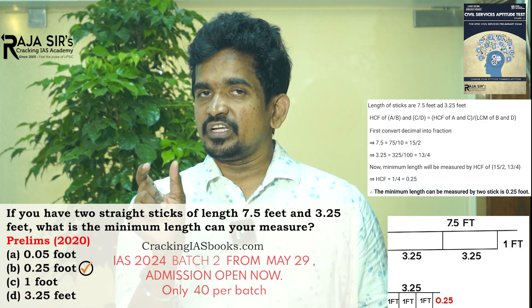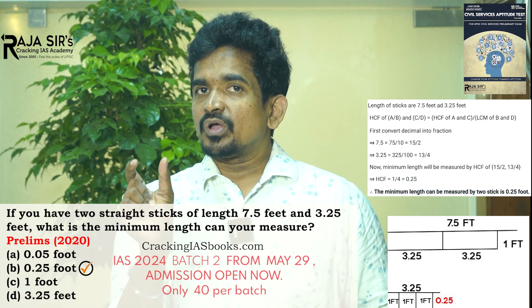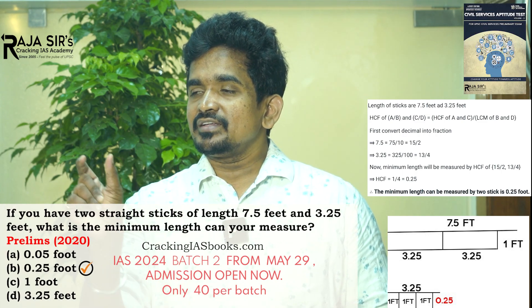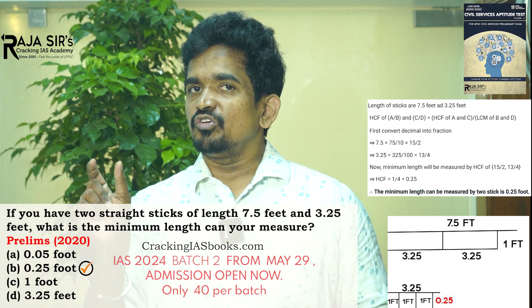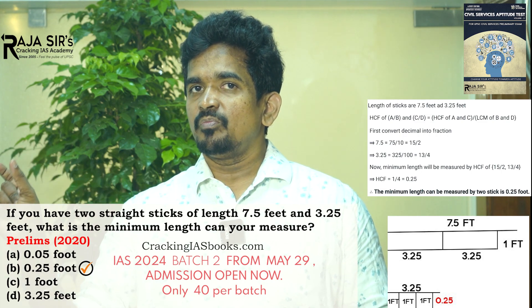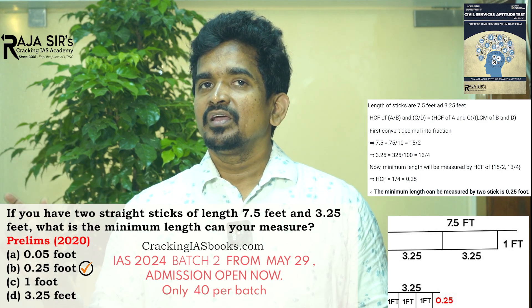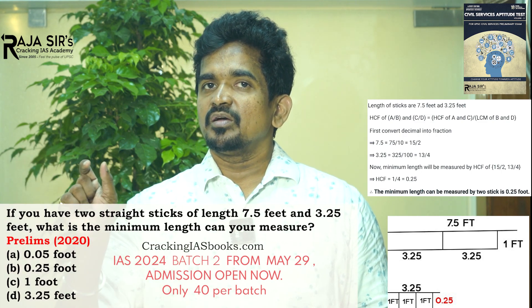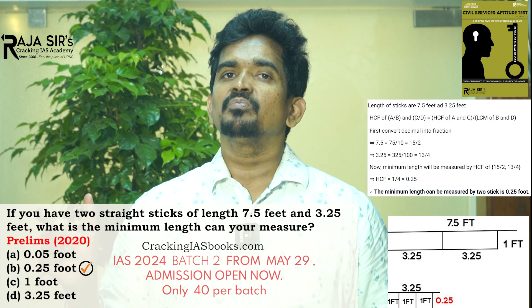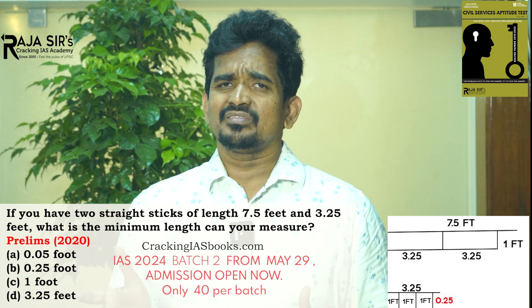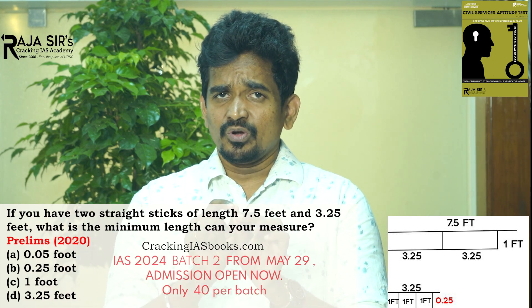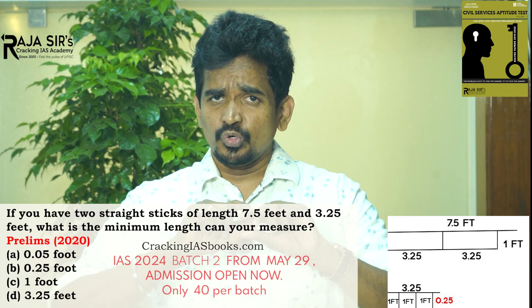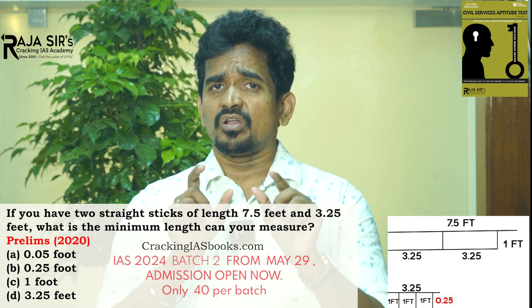Now take that 1-foot remainder and measure it against the 3.25-feet stick. The 1-foot length fits three times into 3.25 feet, and you are left with 0.25 feet. So the minimum length you can measure is 0.25 feet.